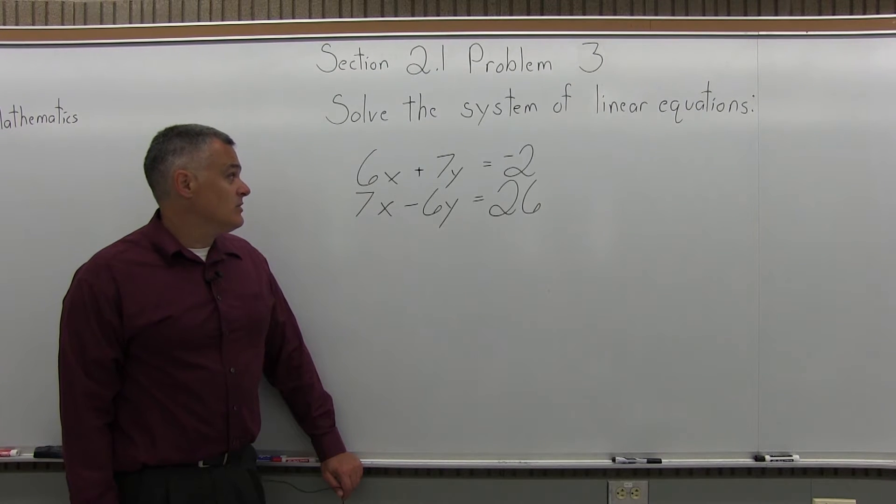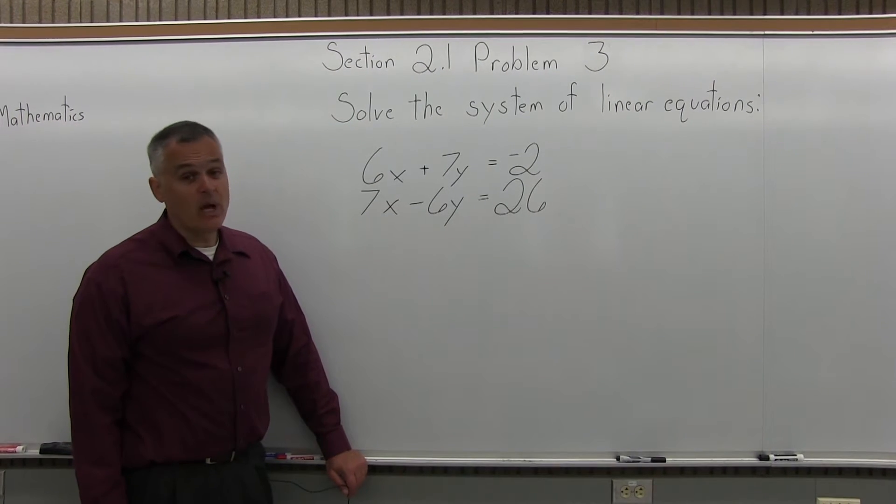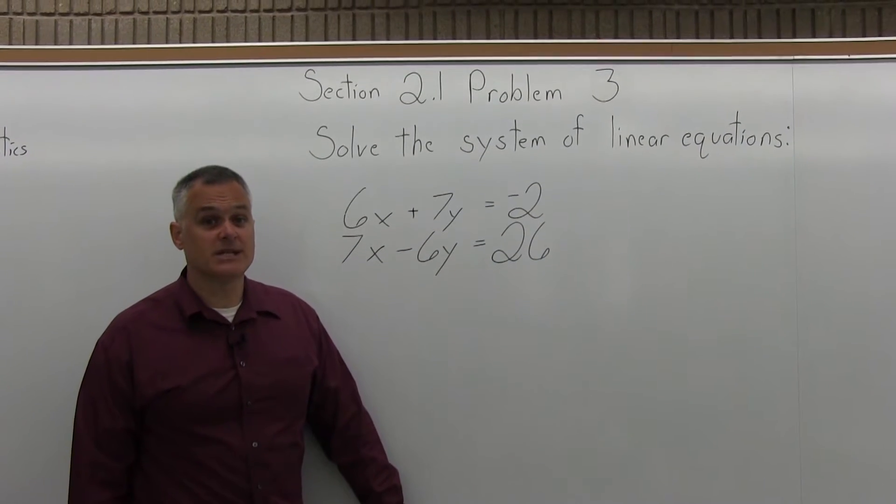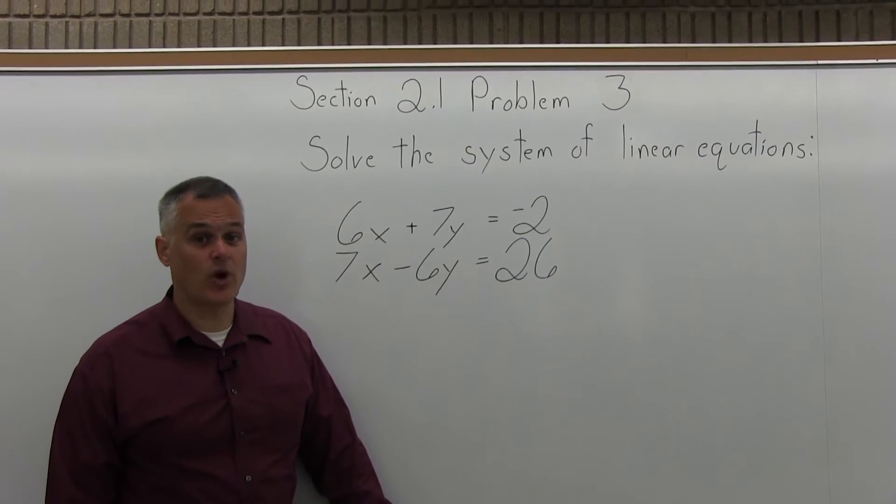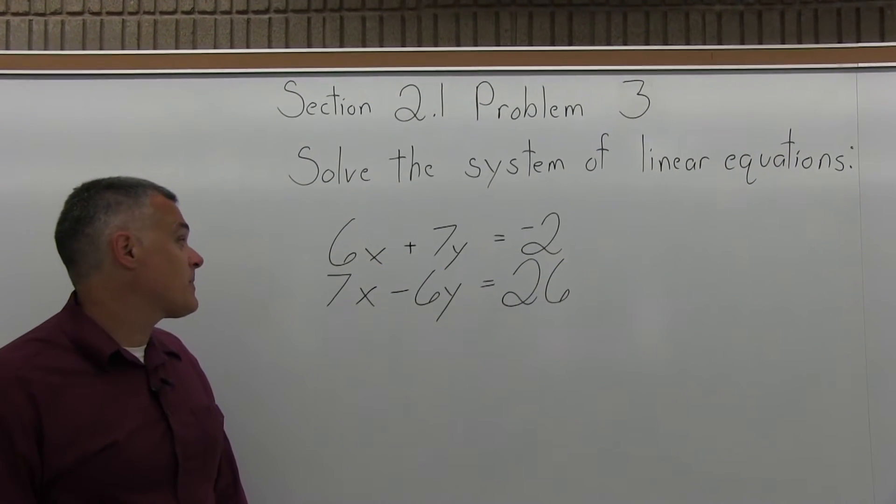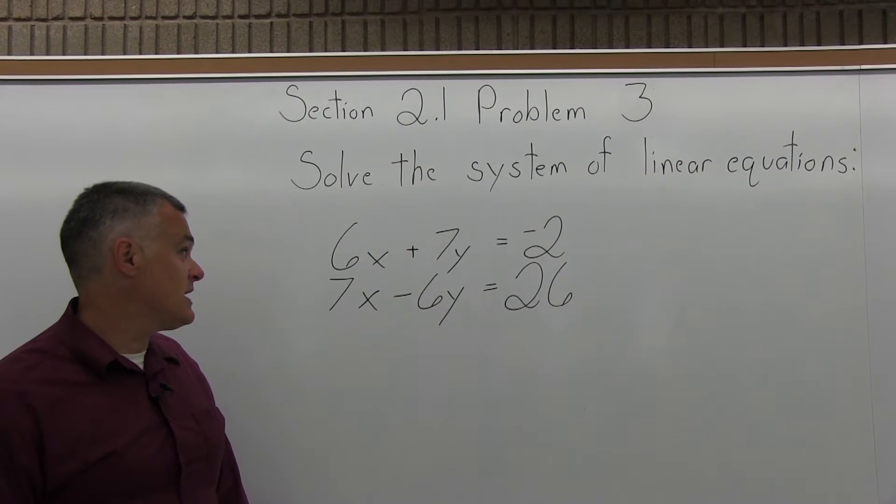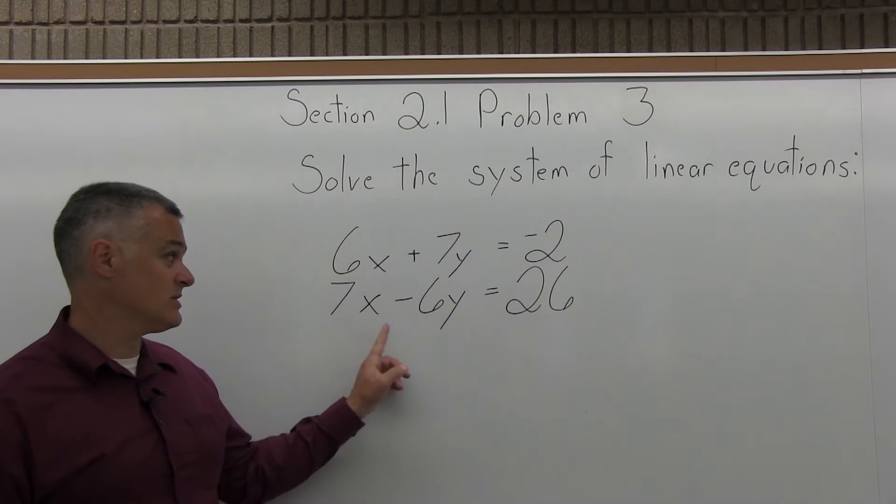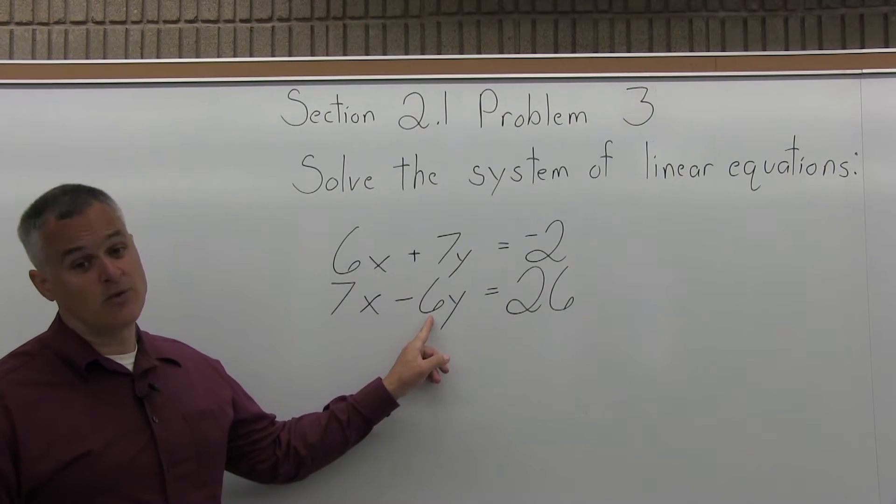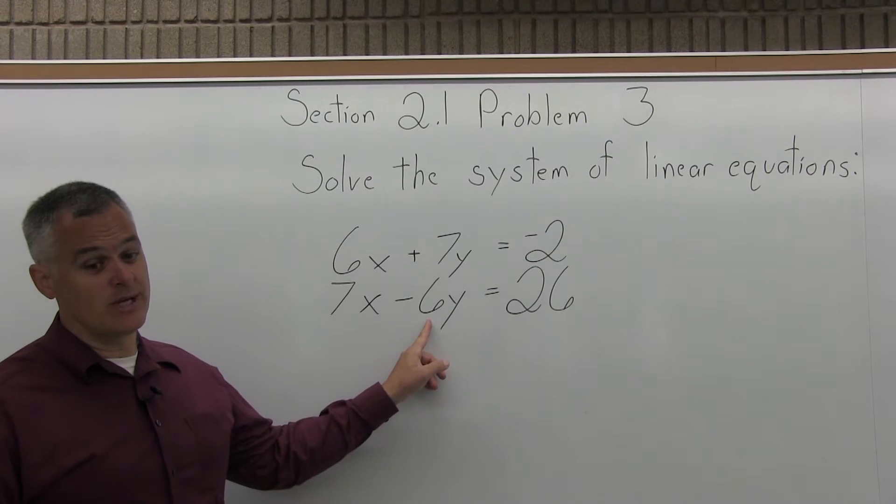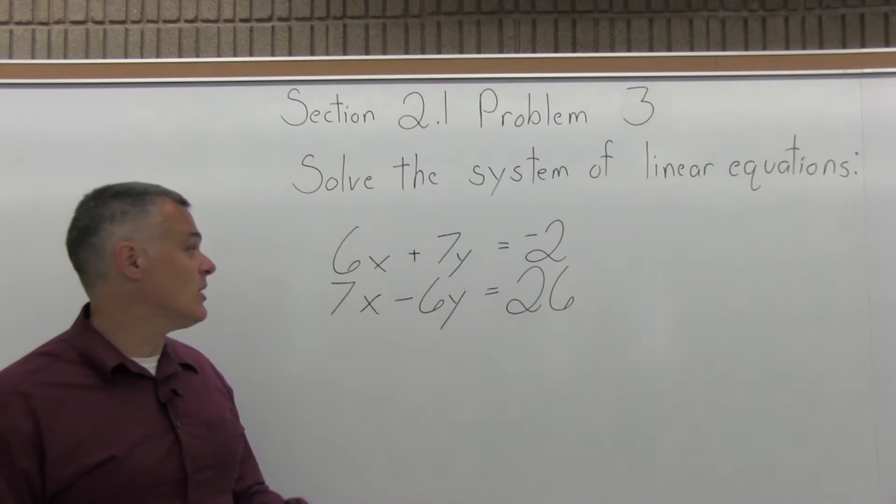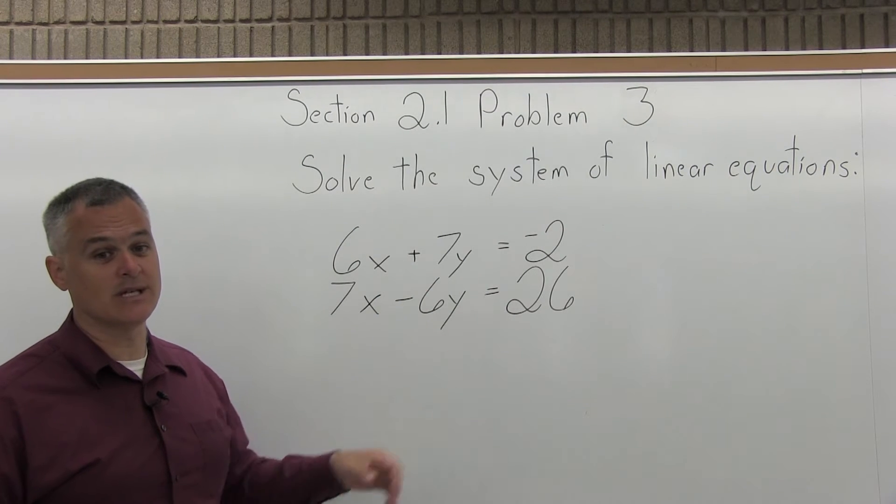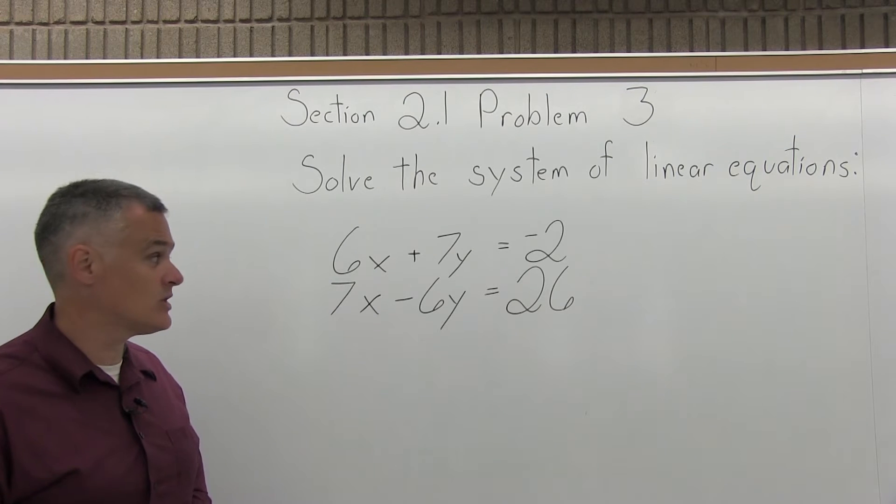Step 1: multiply one or both equations times some value so that one of the variables has the same number in front, but with opposite signs. Our options are very similar. For the x's, we could go with 42x and negative 42x and cancel the x's. Or for the y's, 42y and negative 42y would cancel the y's. You should get the same answer either way. Since the y's have opposite signs already, I'm going to choose to cancel the y's. But the x's should work just as well.